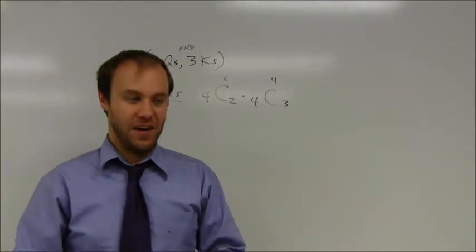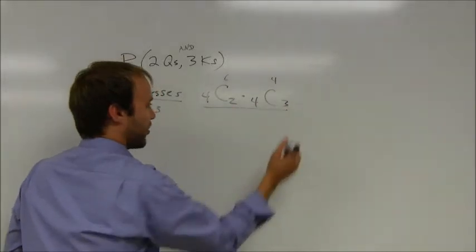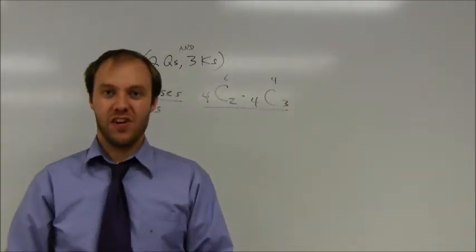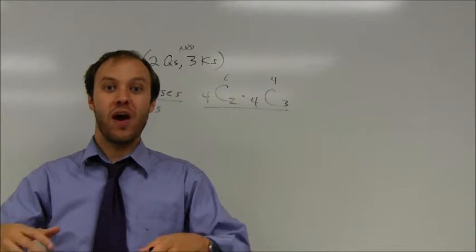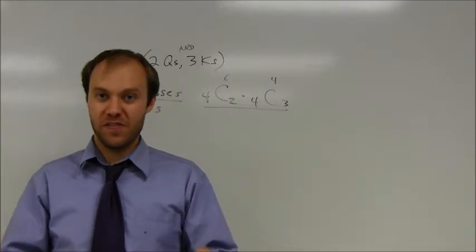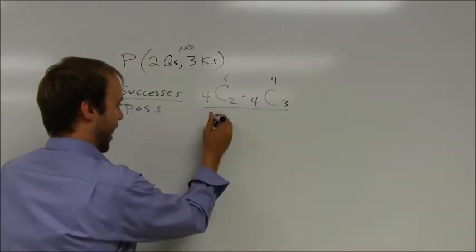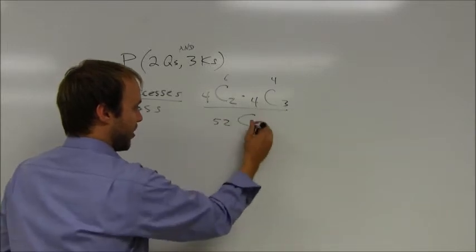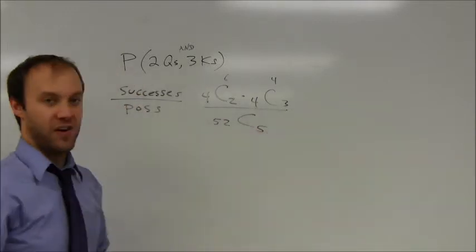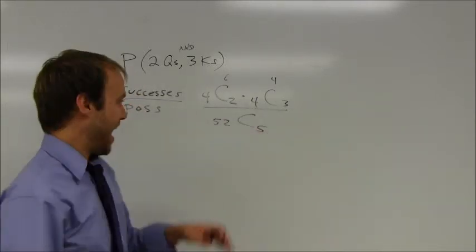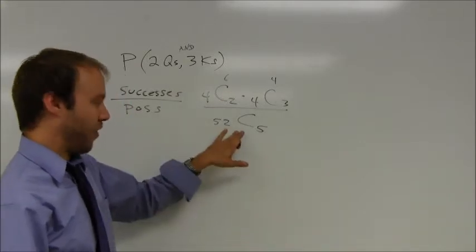Now, for the denominator. I want to look at the total possibilities. So, how many cards am I pulling out total? How many cards do I have total? There are 52 cards in the deck. I want to remove five of those cards. And so, you can multiply this out. Not one I can do in my head. But you can multiply this out and you can make that calculation.